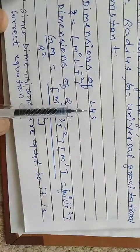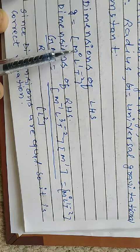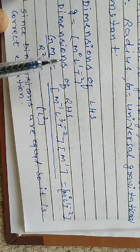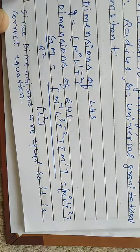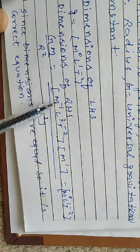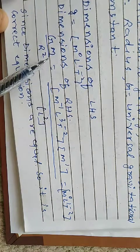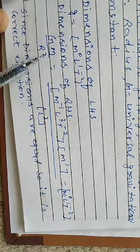Dimensions of left hand side small g, dimension formula is m⁰l¹t⁻². Dimensions of right hand side, GM upon r square: capital G dimension formula m⁻¹l³t⁻², capital M mass, radius l power 2.